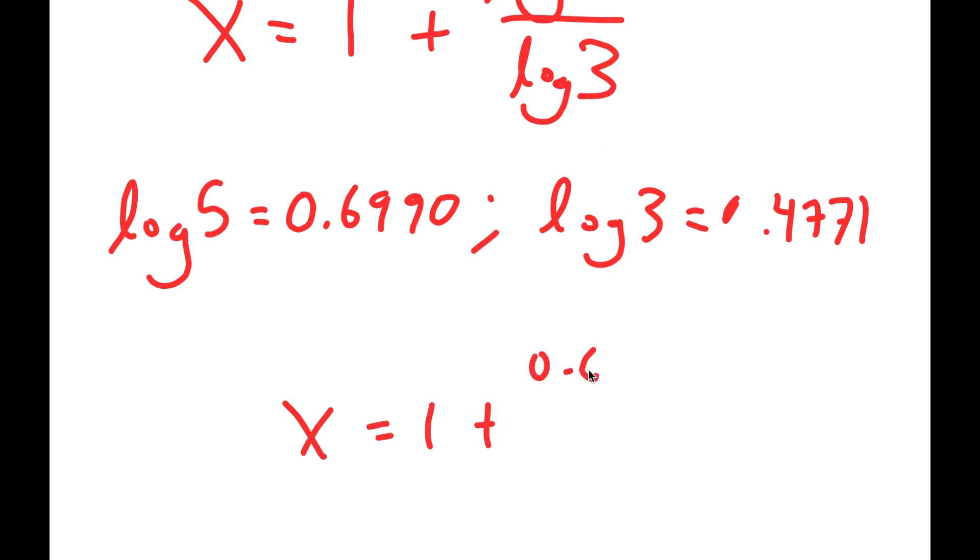So this is going to equal 1 plus 0.6990 over 0.4771.